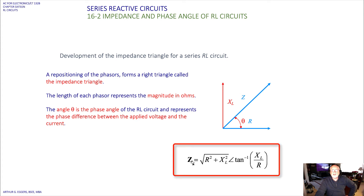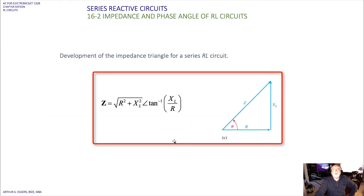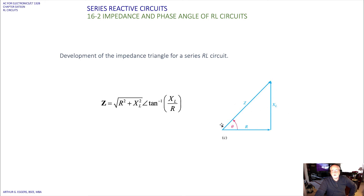The total relationship is Z equals the square root of R squared plus XL squared, at the angle of the inverse tangent of XL over R. Write this relationship in your notebooks — we're dealing with impedance and phase angle for RL circuits. You'll use this right triangle relationship over and over again.